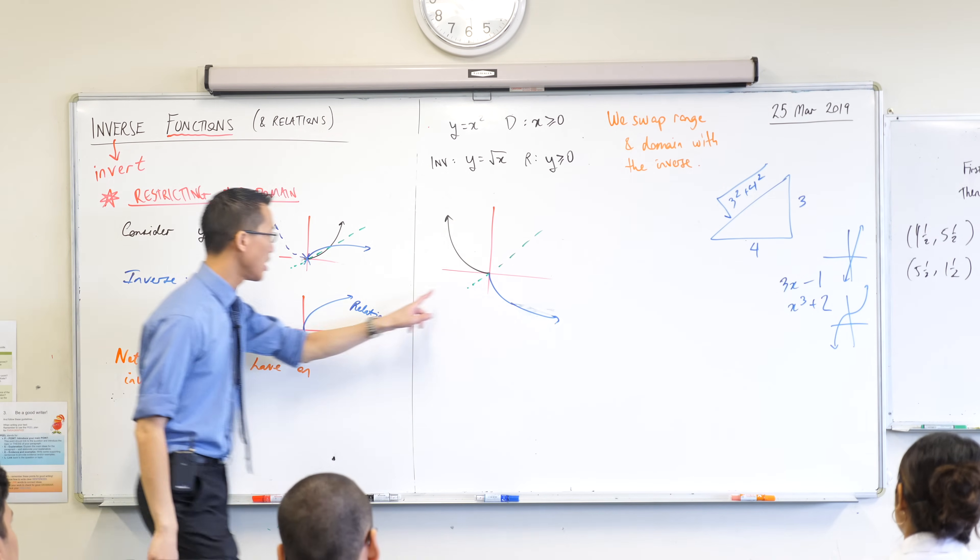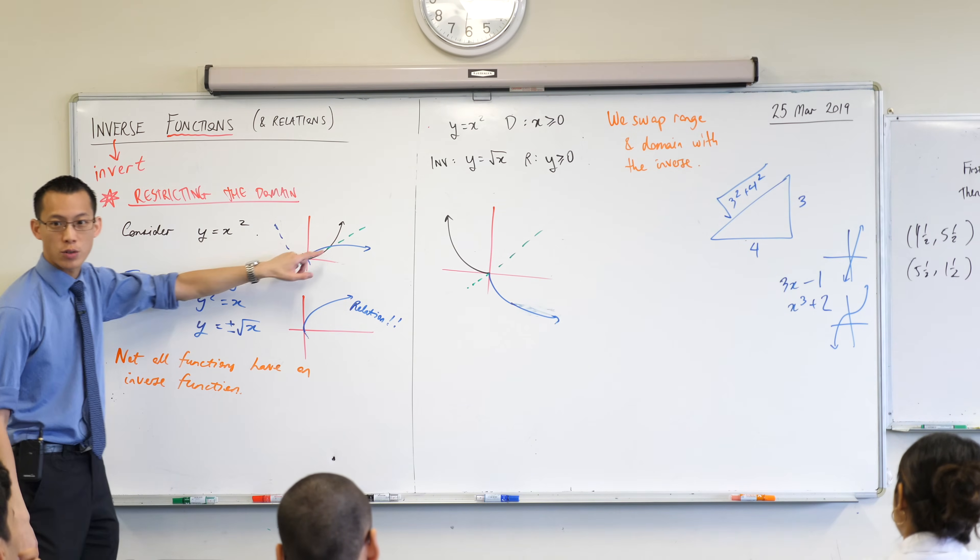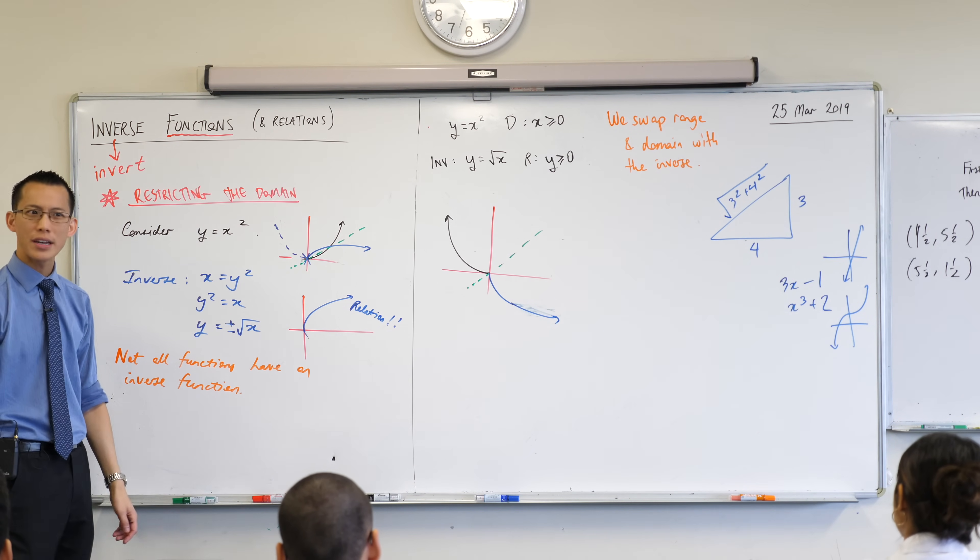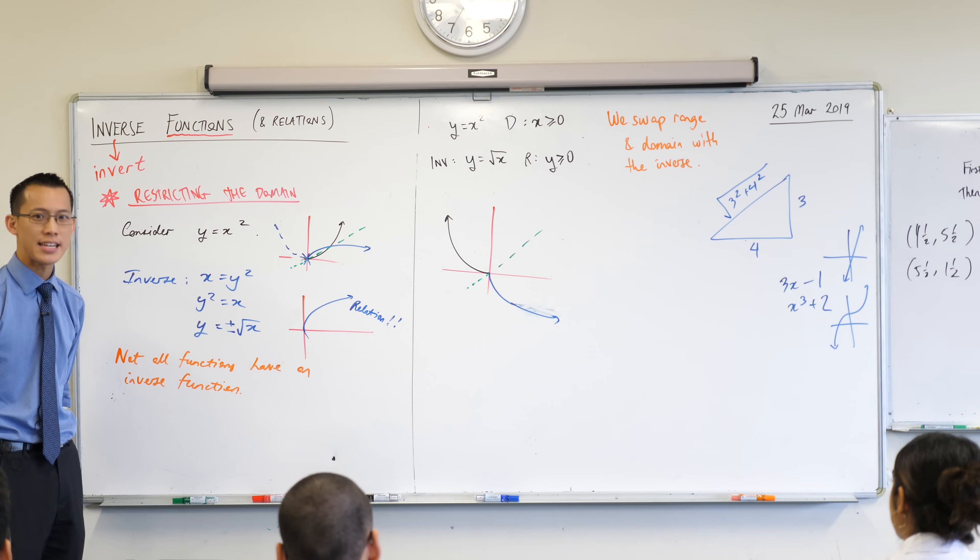That's why I deliberately gave them to you. I just didn't tell you. But this guy over here, the original y equals x squared, is not one-to-one, is it? Which one is it? It's many-to-one.